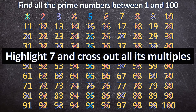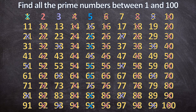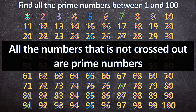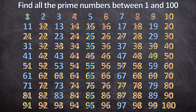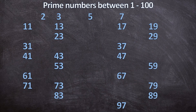And then lastly, I highlight 7 and cross out all its multiples. The remaining multiples of 7 to cross out are 49, 77, and 91. And those are my 5 steps. Everything that is highlighted and not crossed out — all those numbers are prime numbers. There are 25 prime numbers between 1 and 100, and here are all of them.